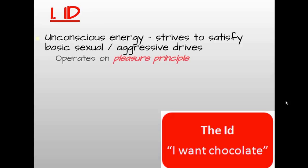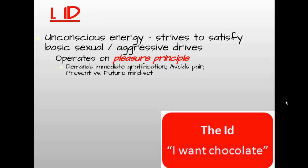The id operates on the pleasure principle, which means it demands immediate gratification, avoids pain, and has a present mindset versus a future mindset. Think about a baby who cries whenever he wants something — 'Give it to me now, make this discomfort go away, and make it go away now.' An infant cries when he needs something and wants that need met immediately. We are all born with our id — it's present at birth, and each individual has the same id. We all have the same sexual and aggressive drives that we're born with as human beings.